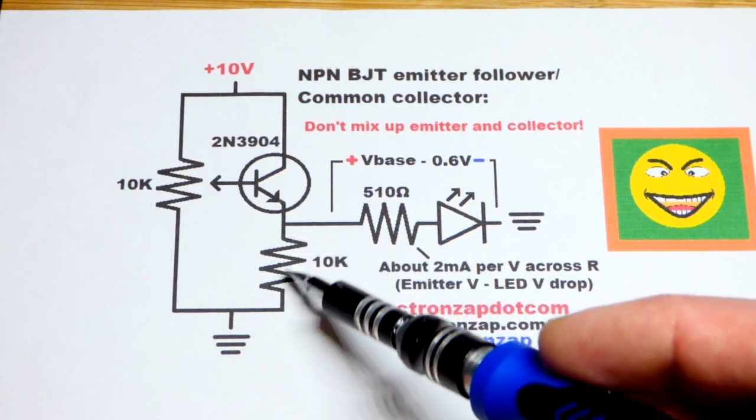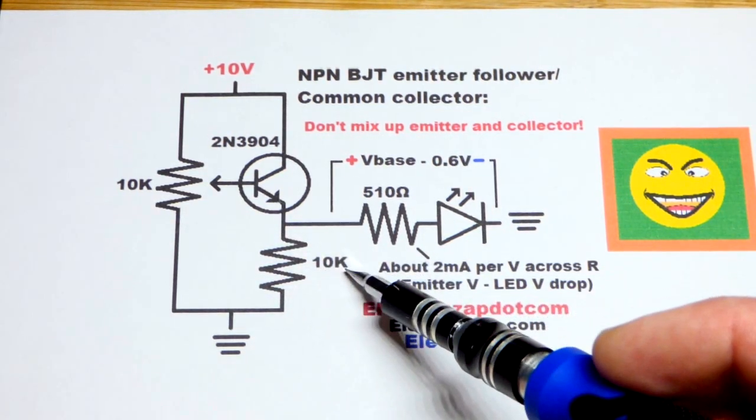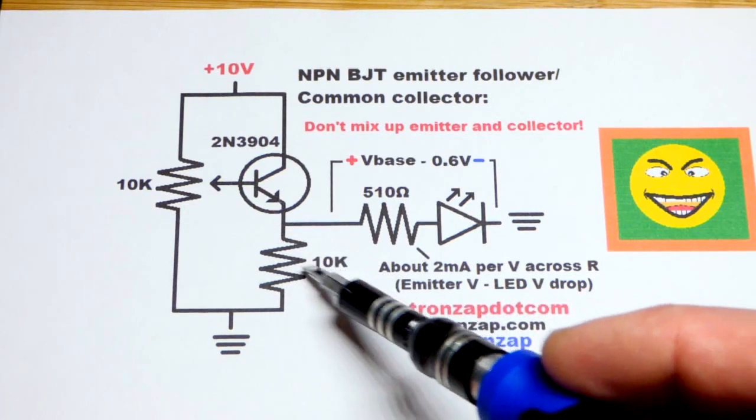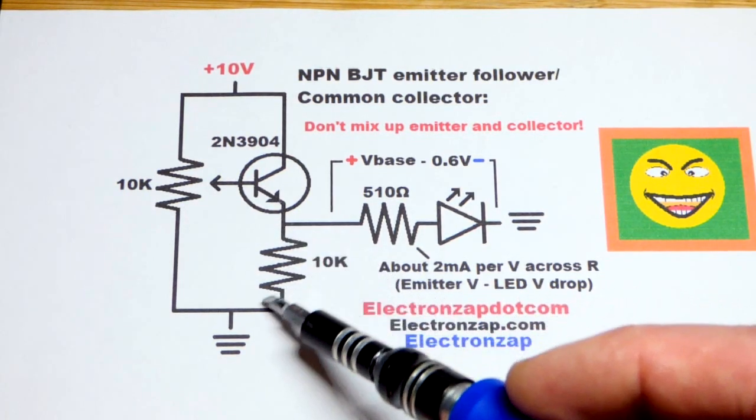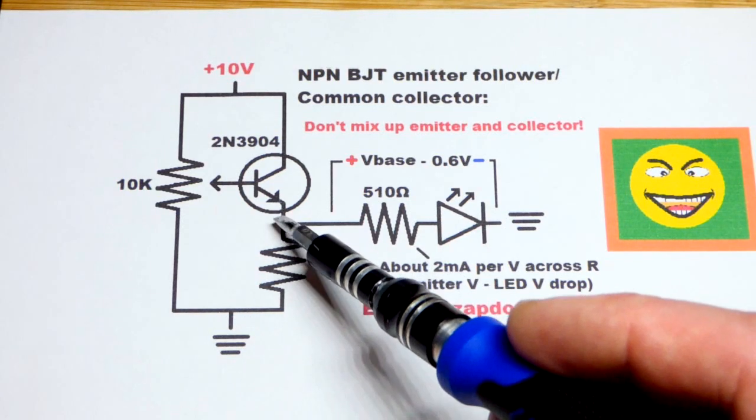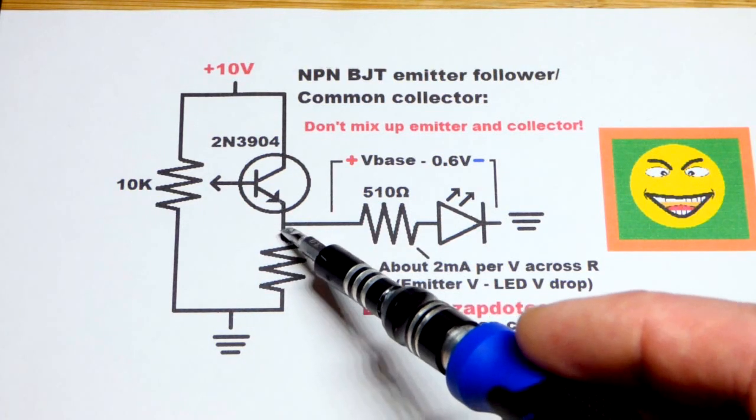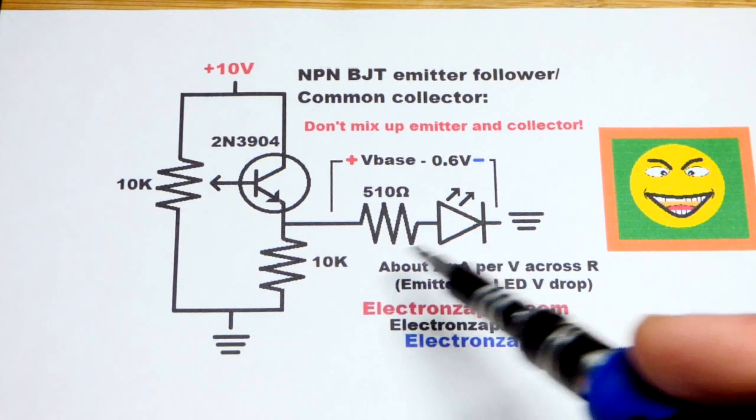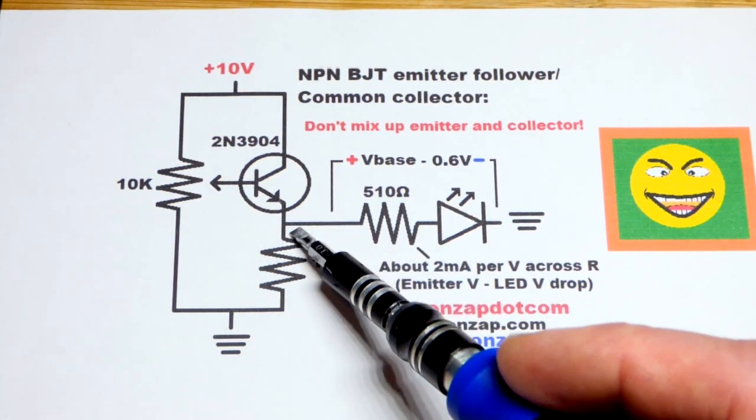This 10 kiloohm resistor doesn't have to be 10 kiloohm, and a lot of times you can get away without a resistor there. But a 10 kiloohm resistor is going to help hold that voltage. So a lot of times you don't even need it, but I did have one circuit where I absolutely needed it. So it's a good idea just to throw it in there.